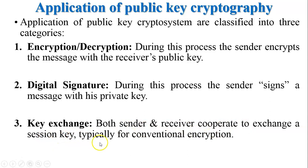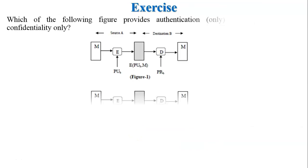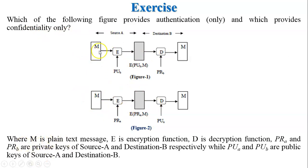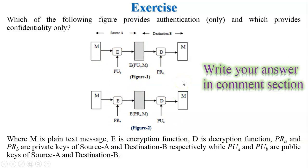Exercise: Which of the following figures provides authentication only and which provides confidentiality only? In both figures, M is the plaintext, E is the encryption function, D is the decryption function. PRa and PRb are the private keys of source A and destination B respectively, while PUa and PUb are the public keys of source A and destination B. You have to find which figure provides confidentiality and which provides authentication.